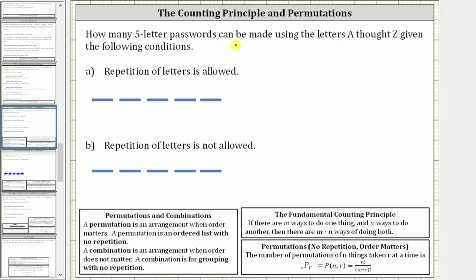How many five-letter passwords can be made using the letters A through Z, given the following conditions? For part A, repetition of letters is allowed. Each bar represents a letter in the five-letter password. Let's begin by determining how many ways we can select each letter.